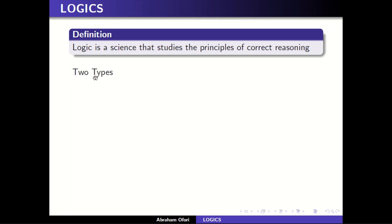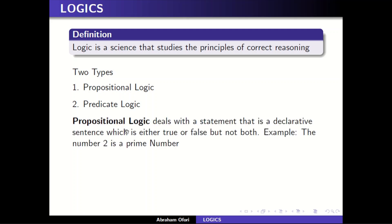Logic is divided into two types. The first one is propositional logic and the second one is predicate logic. Propositional logic deals with a declarative sentence which is either true or false but not both. For example, the statement 'the number two is a prime number' is a declarative statement — two is indeed a prime number, so this statement is true.